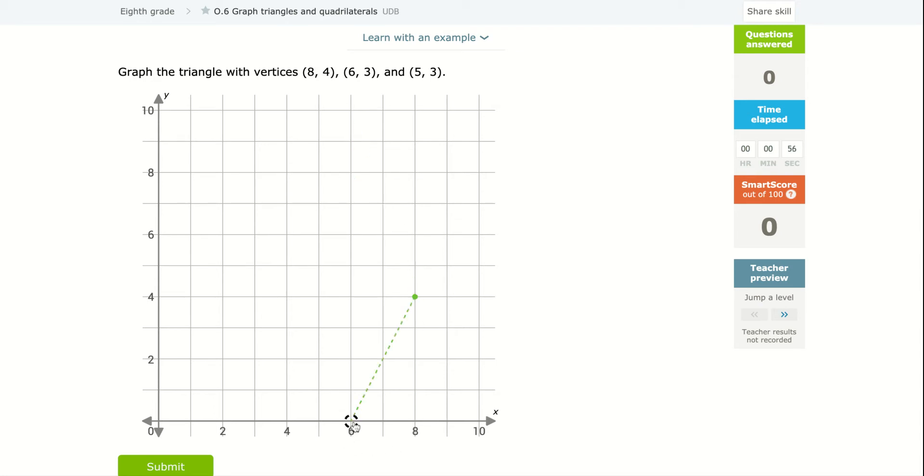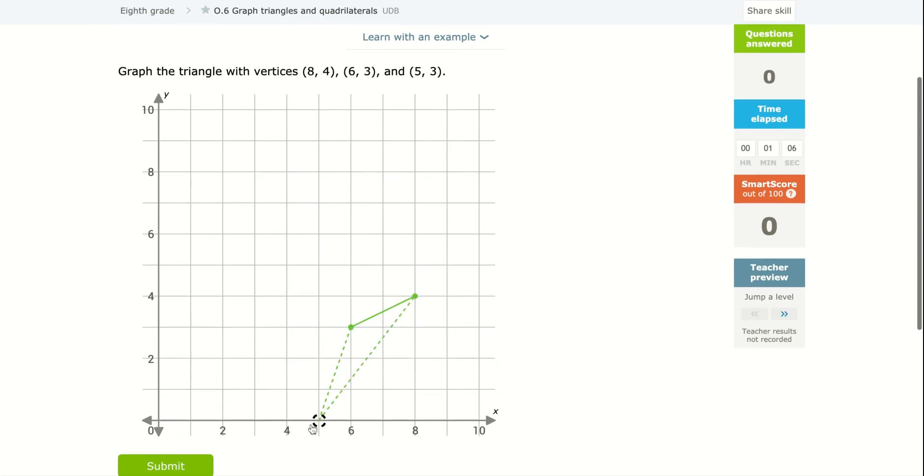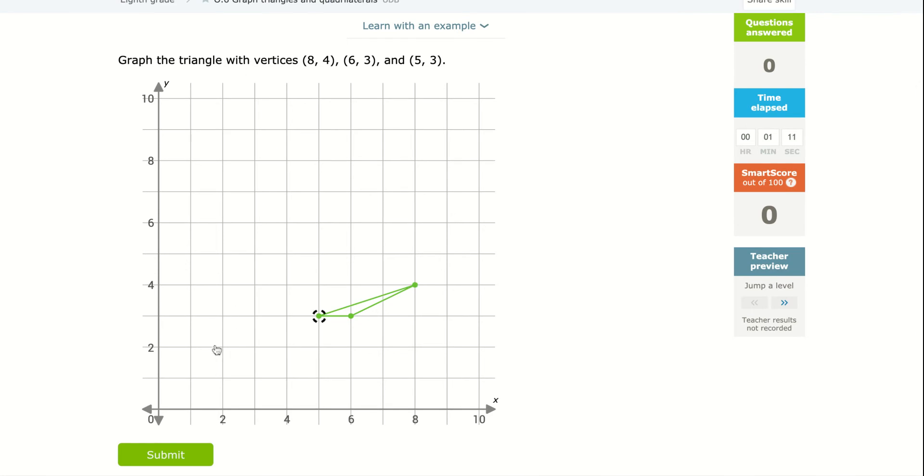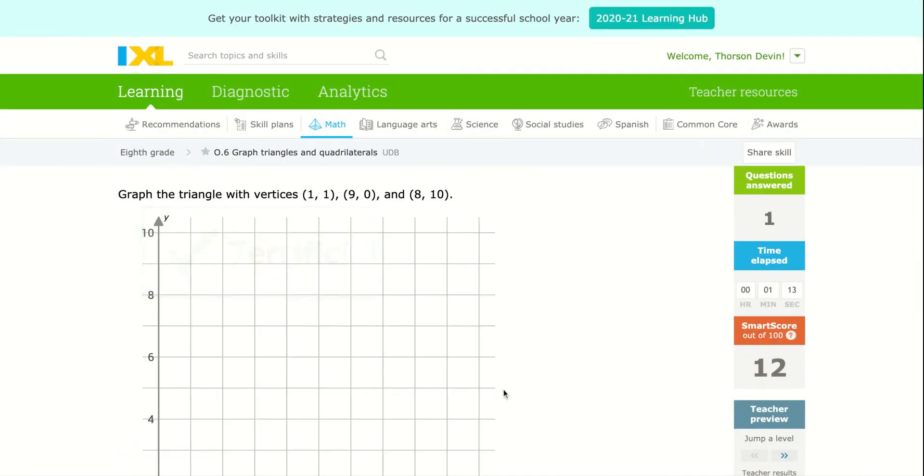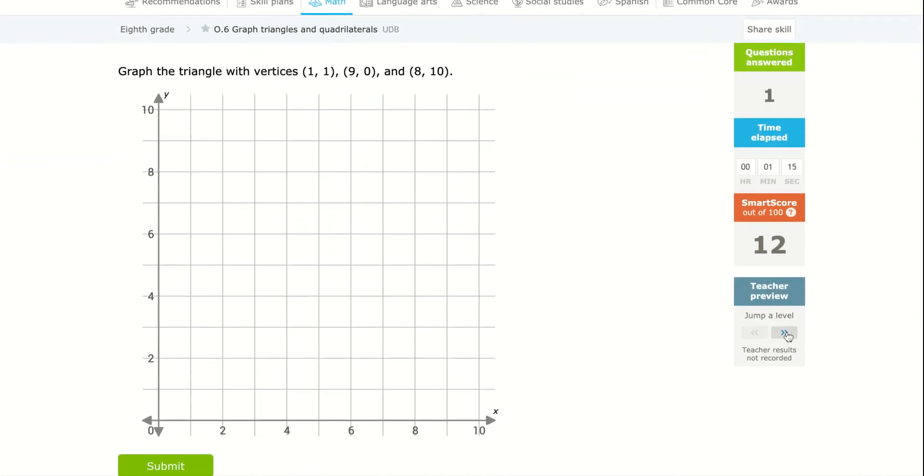Then I'm going to go over to six, go up to three. So that's the six, three point because I went right six up three. And then the last point, five, three, I go over five, I go up three and it's this little triangle, graph the triangle. So this should not be a very difficult lesson.